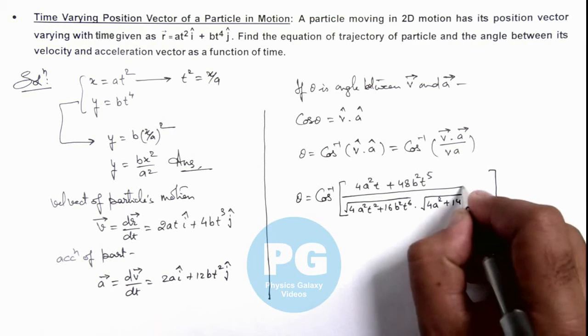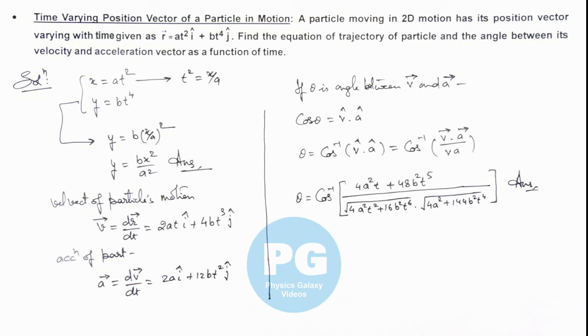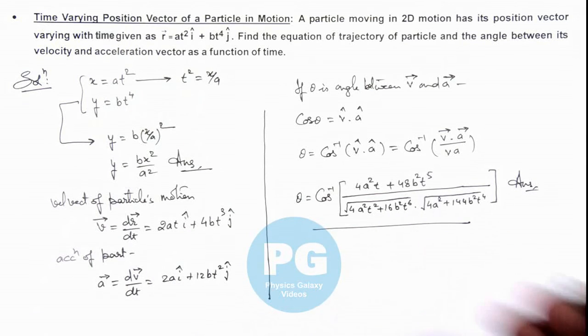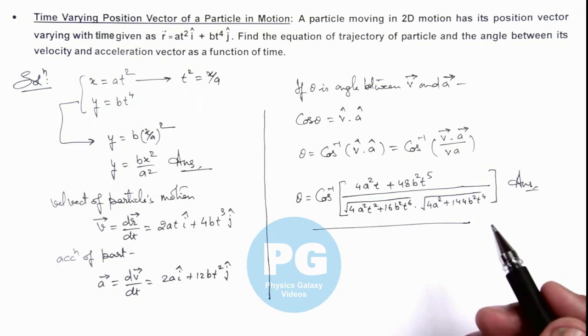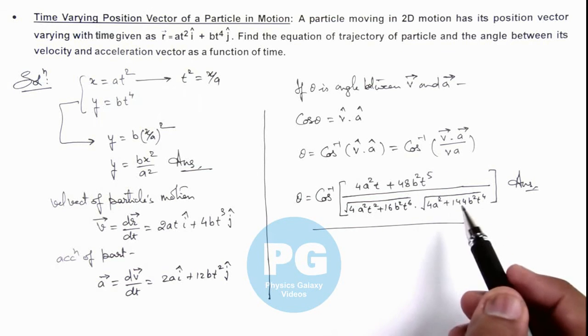So this is our final result. If you wish, it can be further simplified, or this is the result. If numerical values of a, b, and time are given, we can numerically calculate the angle between velocity vector and acceleration vector of such a particle in its motion.